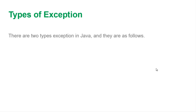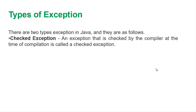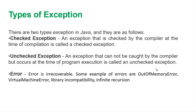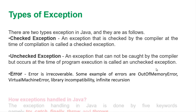There are two main types of exceptions. Checked exceptions are checked by the compiler at the time of compilation. Unchecked exceptions cannot be caught by the compiler but occur at runtime during program execution. These are commonly asked in interview questions. Apart from these two, there is another category called errors, which are irrecoverable. Examples of errors include out-of-memory errors, virtual machine errors, library incompatibility errors, and infinite recursion errors. Exceptions can be recovered, but errors cannot.